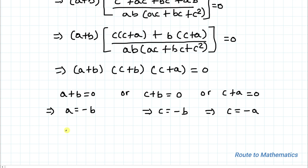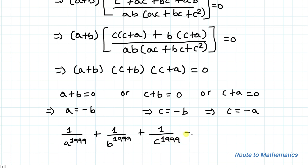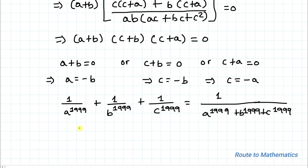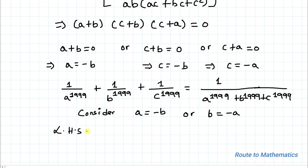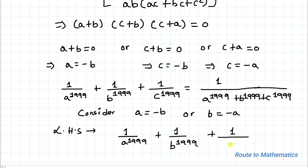So what we are asked to prove: we need to show 1/a^1999 + 1/b^1999 + 1/c^1999 = 1/(a^1999 + b^1999 + c^1999). Now consider the case a = -b (equivalently b = -a).